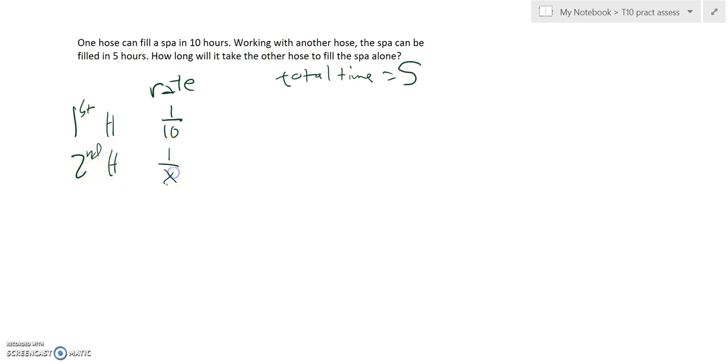Now here's what I know. I'm filling up one hose and this one, my time is five, so this one gets to work for five hours. So here I have five times one-tenth, which is five-tenths. This is how much the first hose fills up in that amount of time.